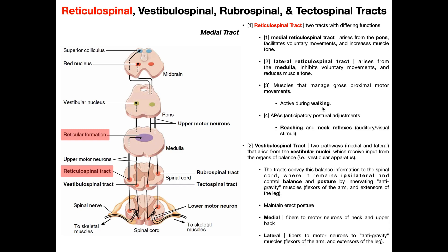If an extensor needs to contract, neurons from the medial reticulospinal tract will activate the extensors, while the lateral portion, which inhibits muscles, should be inhibiting the flexors in that limb so they don't compete and reduce the efficiency of the extensors. Likewise, at other portions of walking when the flexors need to be activated, those are deactivated via the medial portion of the tract, and the extensors are inhibited via the lateral portion. This alternating activation and inhibition of flexors and extensors is the reticulospinal tract.